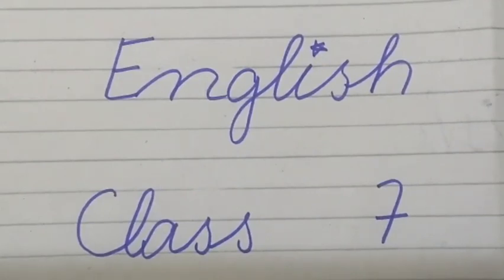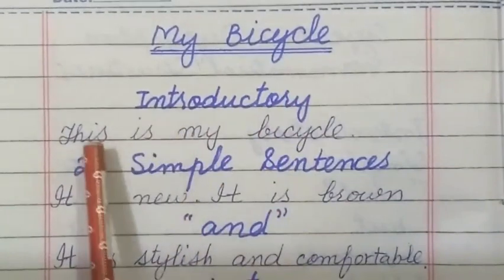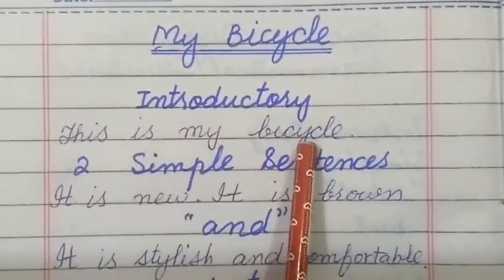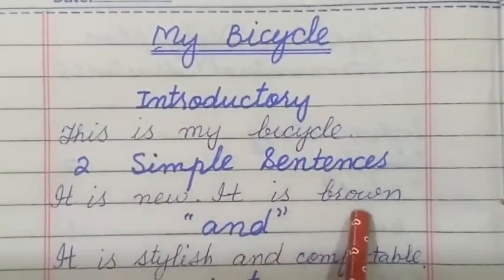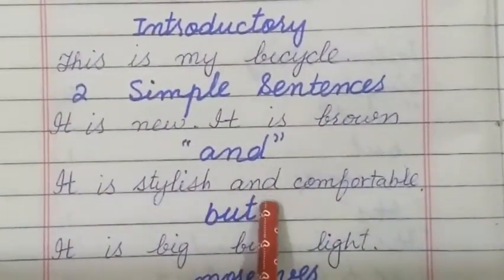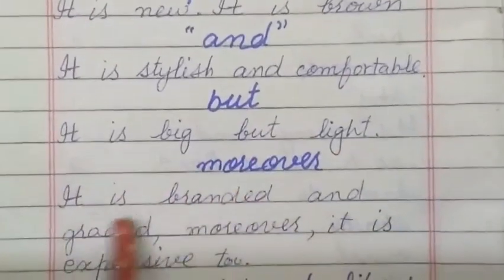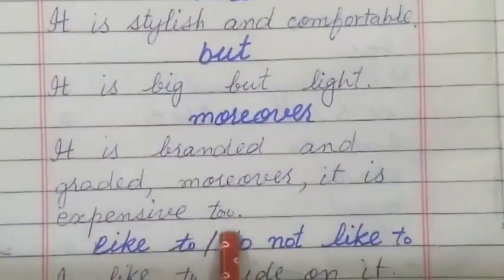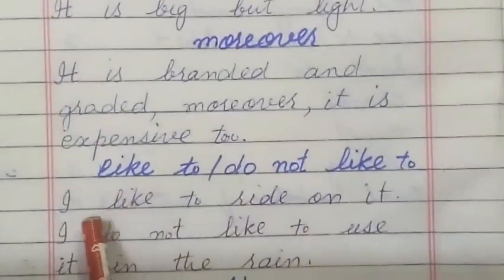According to the given structures, I would like to explain the structures once again for your ease. The topic is 'My Bicycle.' The introductory sentence is: 'This is my bicycle.' Then two simple sentences: 'It is new. It is brown.' These are two simple sentences. 'It is stylish and comfortable' — use of 'and.' 'It is big but light' — use of 'but.' 'It is branded and graded. Moreover, it is expensive' — use of 'moreover.'